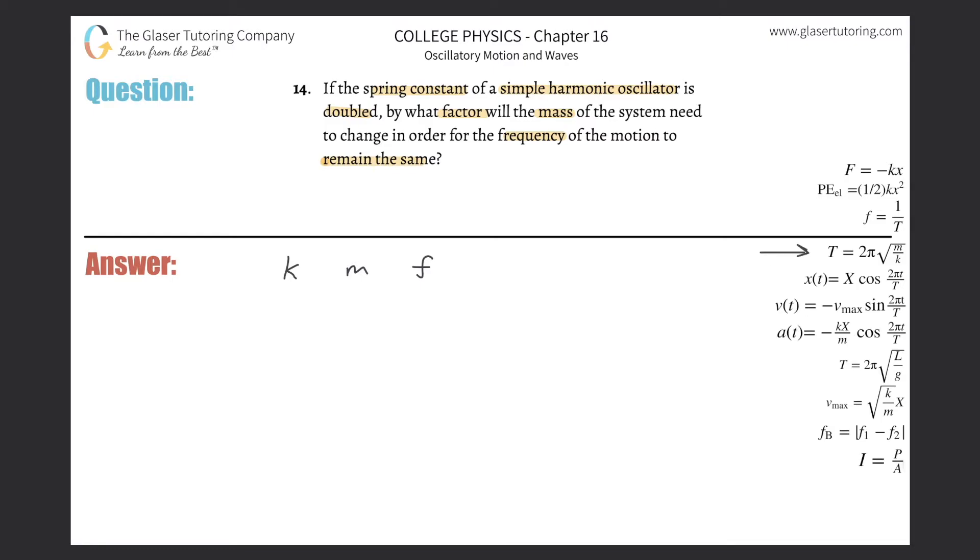It's right over here. The period will be equal to 2π multiplied by the square root of the mass of the object that's oscillating divided by the spring constant. So T equals 2π times the square root of m over k, where m is the mass that's oscillating and k is the spring constant of the spring that's producing the oscillation.